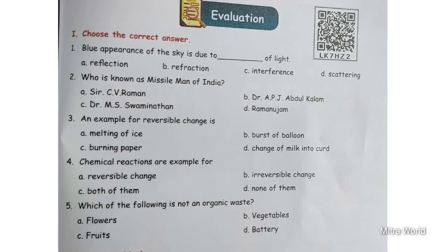Fourth question: Chemical reactions are an example for which options? Reversible change, irreversible change, both of them, none of them. Chemical reactions are irreversible changes. Option B, irreversible change.